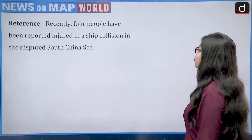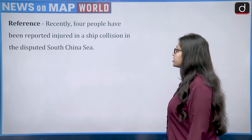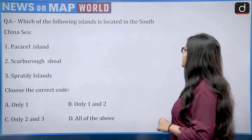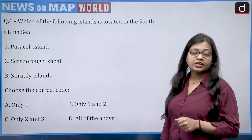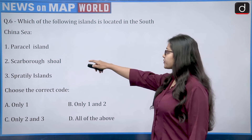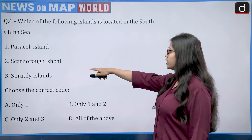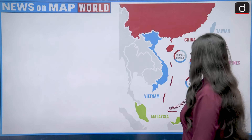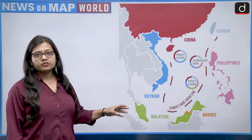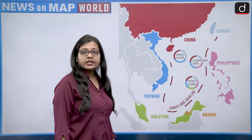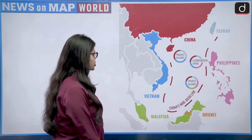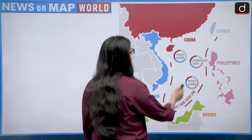The next reference involves a ship collision in the disputed South China Sea. The question asks which of the following islands are located in the South China Sea: Paracel Islands, Scarborough Shoal, and Spratly Islands. The South China Sea lies to the south of China and is an extended western arm of the Pacific Ocean, forming borders with China, Vietnam, Malaysia, Brunei, Philippines, and Taiwan.